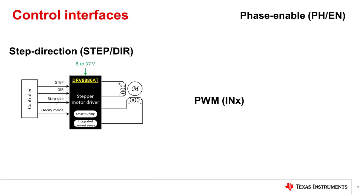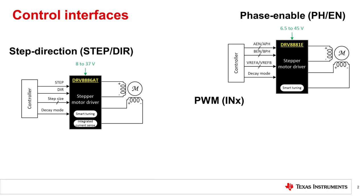The step direction interface is only useful for driving stepper motors. The phase enable interface is a type of parallel interface for controlling brush DC and stepper motors. The enable, or EN pin, controls when the driver outputs energize the stepper motor. The phase, or PH pin, selects the direction the current flows through the windings. The VREF pin selects the current level that the driver regulates in the stepper windings. The current levels in the stepper windings determine the rotor position.